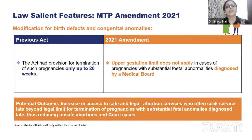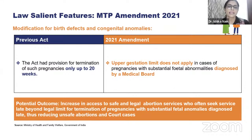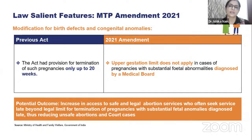A modification was also given for birth defects and congenital anomalies. Earlier, the act had provision for termination of such pregnancies only up to 20 weeks. Now the upper gestation limit does not apply in cases of substantial fetal abnormalities diagnosed by a medical board. The board is constituted by the state authority and includes an obstetrician, a pediatrician, and a sonologist. This reduces unsafe abortions and court cases, especially since most patients come after 20 weeks having received their first ultrasound at 21 or 22 weeks.